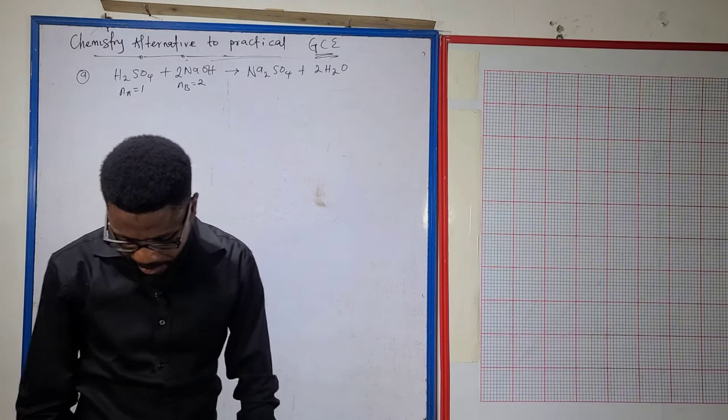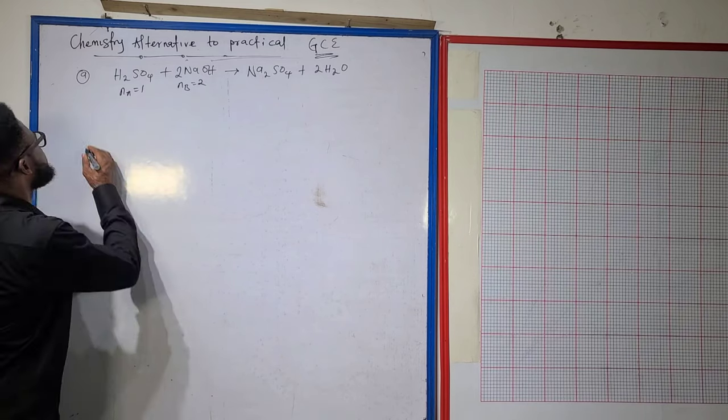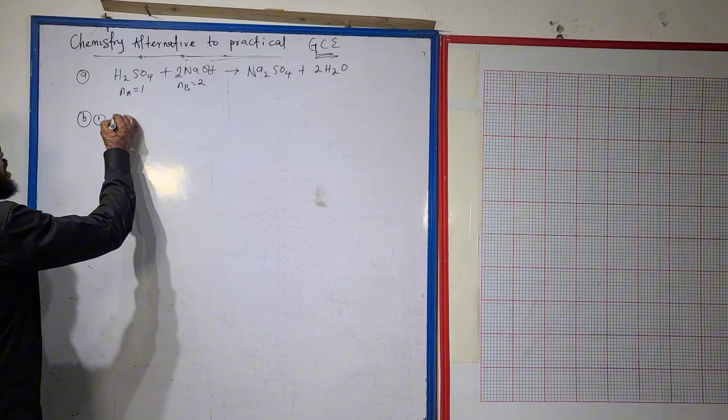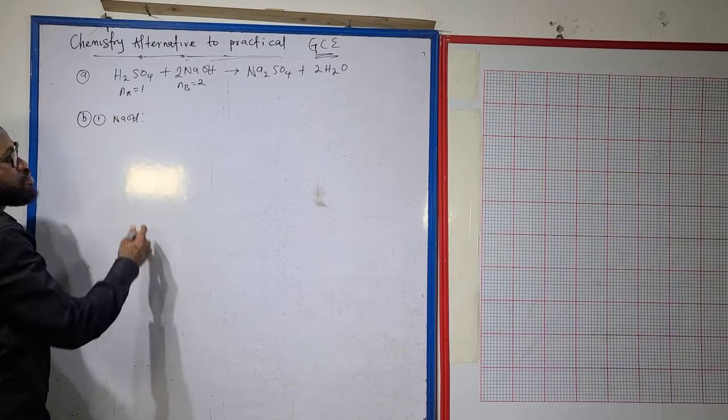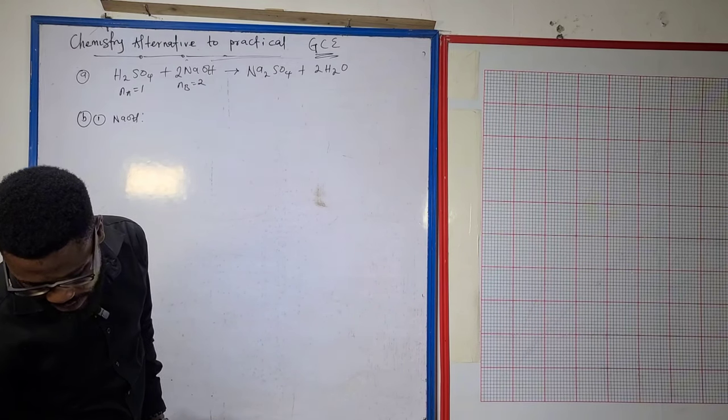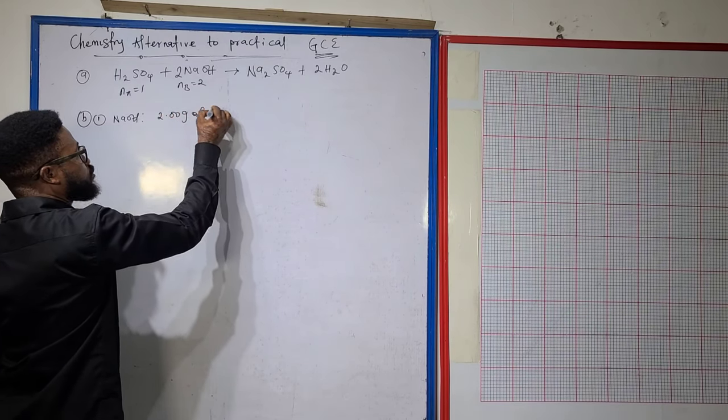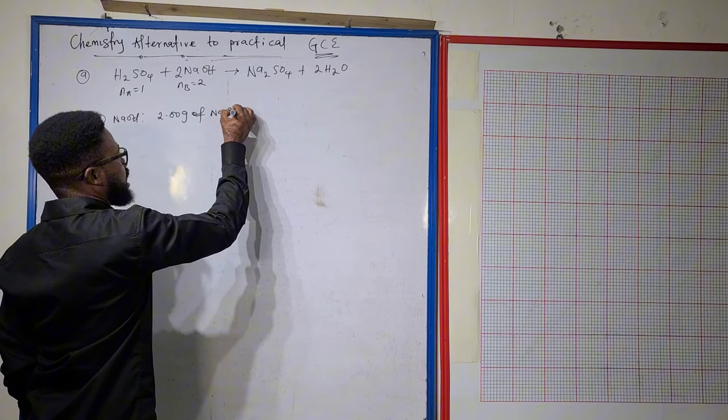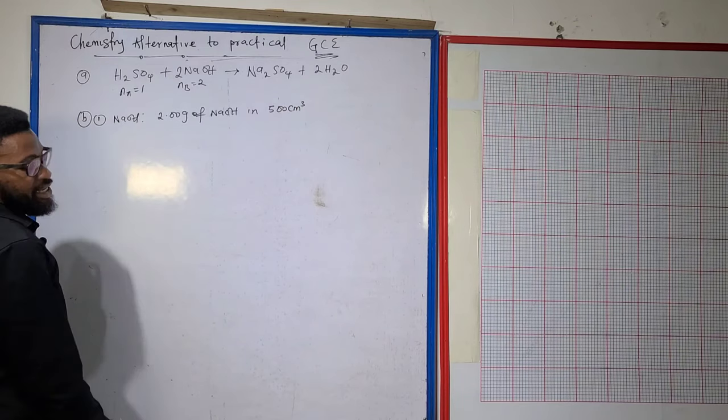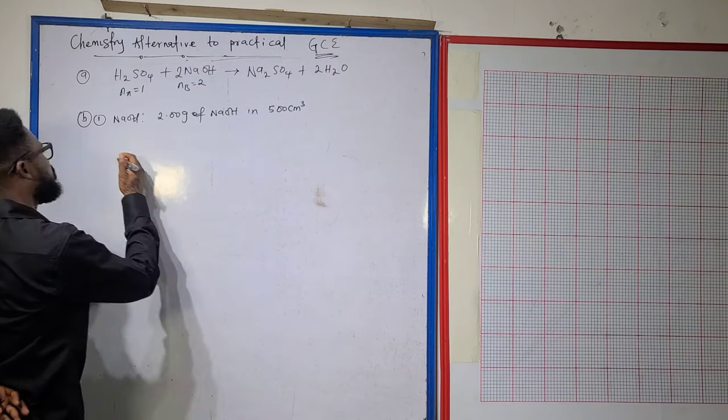Question b talks about calculating the concentration of sodium hydroxide in moles per dm³. For b1, looking at the available data, I was told that 2 grams of the alkali was in 500 cm³ of solution. So I have 2.00 grams of sodium hydroxide in 500 cm³.